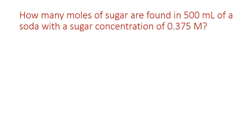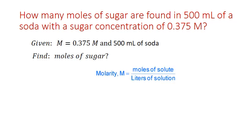If you know the molarity of a solution, you can also calculate the number of moles or mass of solute, or solve for the volume that contains a certain amount of solute. For example, how many moles of sugar are found in 500 milliliters of soda with a typical sugar concentration of 0.375 moles per liter? We're given the molarity and the volume, and we're asked to find moles of sugar.